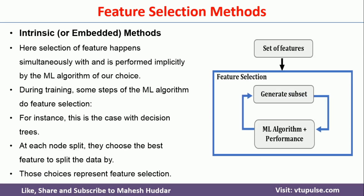The last feature selection method is intrinsic or embedded methods. Some machine learning algorithms have this feature built in — for example, decision trees. While building the tree, we start with the feature having the most information gain and build the tree from there. At each subsequent level, we select the feature from the remaining ones that has the most information gain. Rather than considering all features, we consider only those features which have importance, and then build the machine learning model.